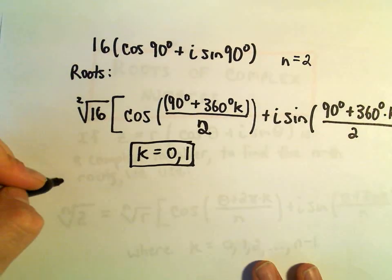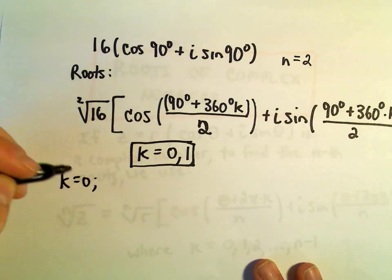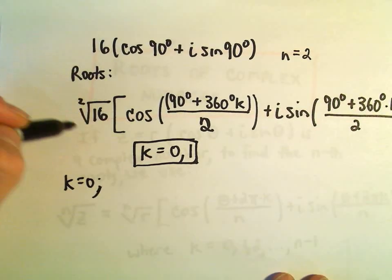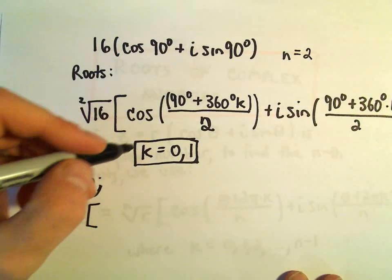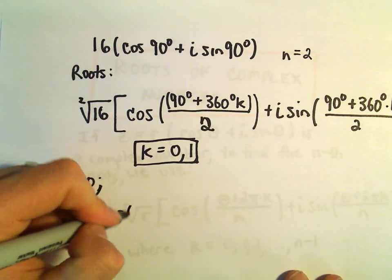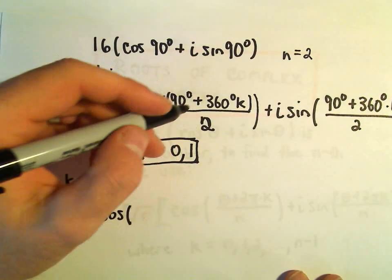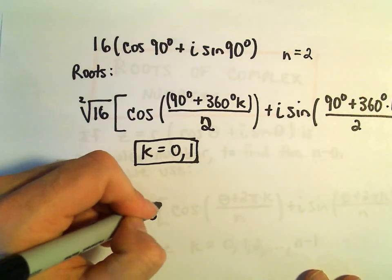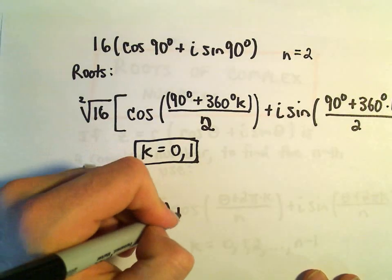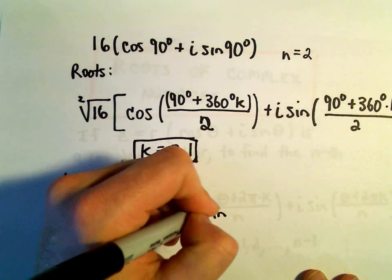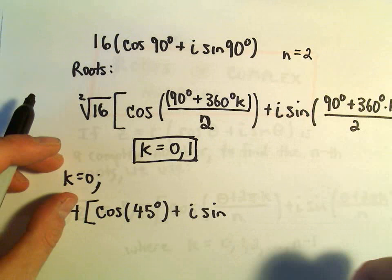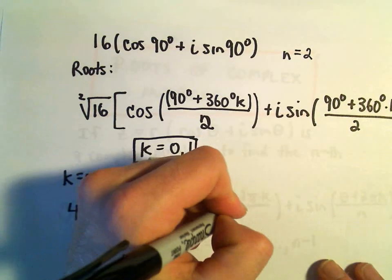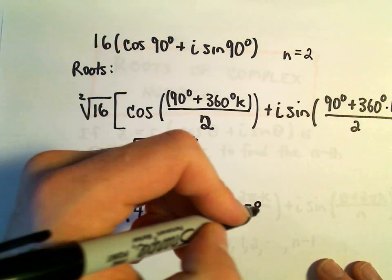So now we just have to evaluate things here. So at k equals 0, well, the square root of 16, that's 4. When we plug in k equals 0, we'll be left with cosine of 90 degrees over 2, which will be 45 degrees, plus i sine. When we plug in k equals 0, again, the 360 times k will be gone. We'll have 90 over 2, or 45 degrees.